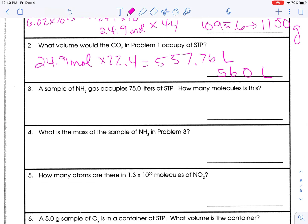A sample of NH3, or ammonia gas, occupies 75 liters at STP. How many molecules is this? We're going to start at volume, go to moles, and then from moles to molecules. So 75 liters divided by 22.4. 75 divided by 22.4 equals... and this has a whole bunch of decimal places. Just leave it in your calculator. That's going to be moles. Now I need to go to molecules. We're going to multiply by 6.02 times 10 to the 23rd. That's Avogadro's number.